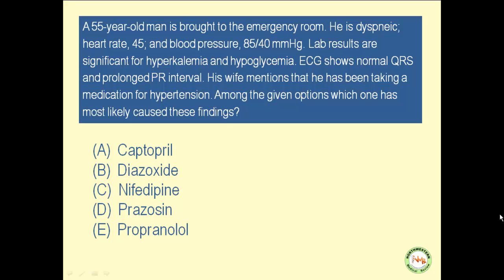A 55-year-old man is brought to the emergency room. He is dyspneic, his heart rate is 45, and his blood pressure is 85 over 40 mmHg. Lab results are significant for hyperkalemia and hypoglycemia. ECG shows normal QRS and prolonged PR interval. His wife mentions that he has been taking a medication for his hypertension. Among the given options, which one has most likely caused these findings?